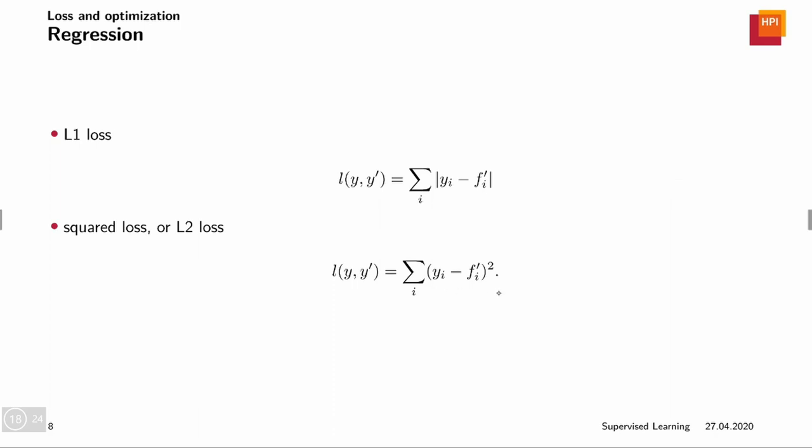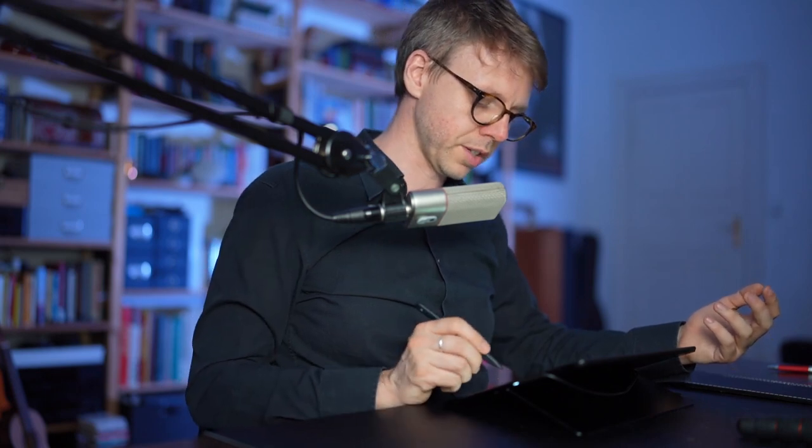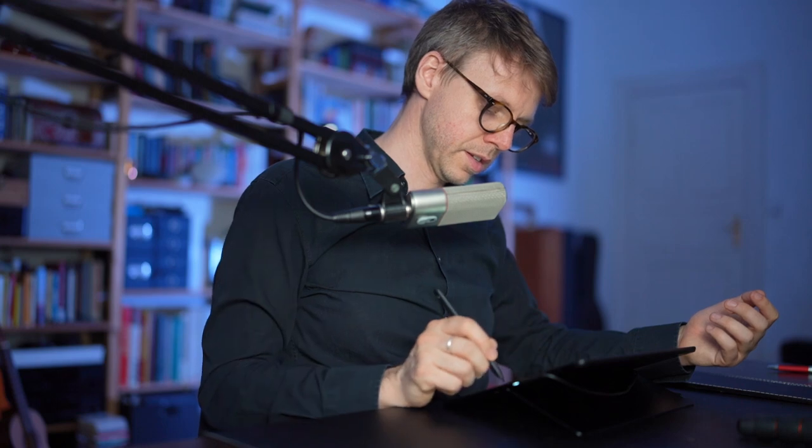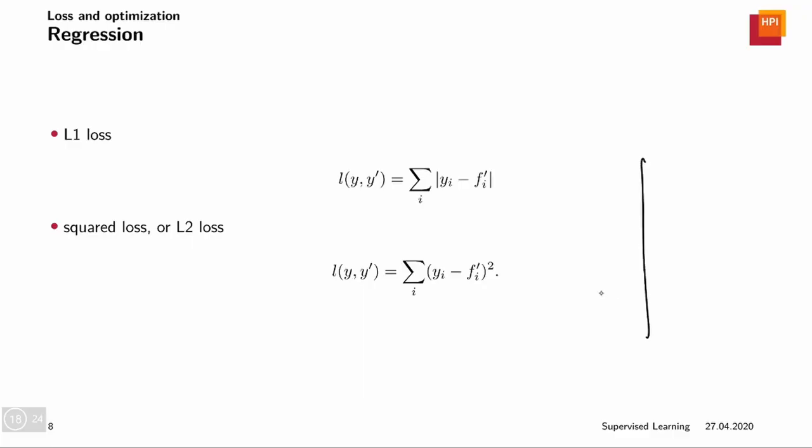Another common loss is the squared loss or L2 loss. And you may already guess that this loss looks like a parabola. So again, if this is yi minus fi, and this is the loss, then this L2 loss looks like a parabola. And please note, if you compare it to the L1 loss, then between 0 and 1 and 0 and minus 1, the L1 loss is larger than the L2 loss. And then it becomes smaller.